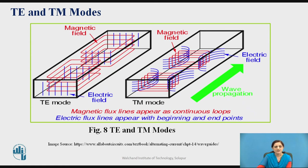These different TE and TM modes are shown in the figure. In this figure, the blue lines represent the electric field, which is perpendicular to the direction of propagation in TE mode, while in TM mode the magnetic field is perpendicular to the direction of propagation. Magnetic flux lines appear as continuous loops, while electric flux lines appear with beginning and end points. For TE mode, the Ez component equals zero, and for TM mode the Hz component equals zero.